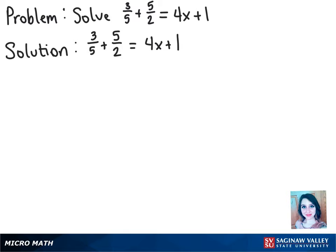So the first thing we're going to look at is the fractions, and we want to think about what the common denominator would be by using the least common multiple. In this case, with the denominators 5 and 2, we know that it would be 10.